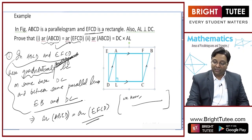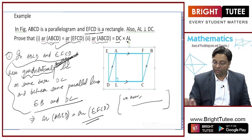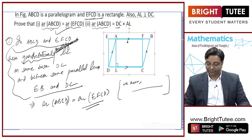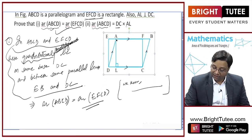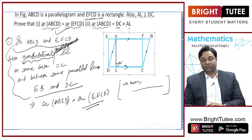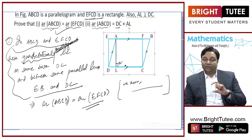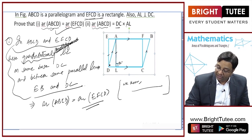Now look at the second part: area of ABCD is equal to DC into AL. AL is nothing but the distance between these two parallel lines. If you notice, this angle is 90 degrees, so you can say this is the height of the parallelogram.